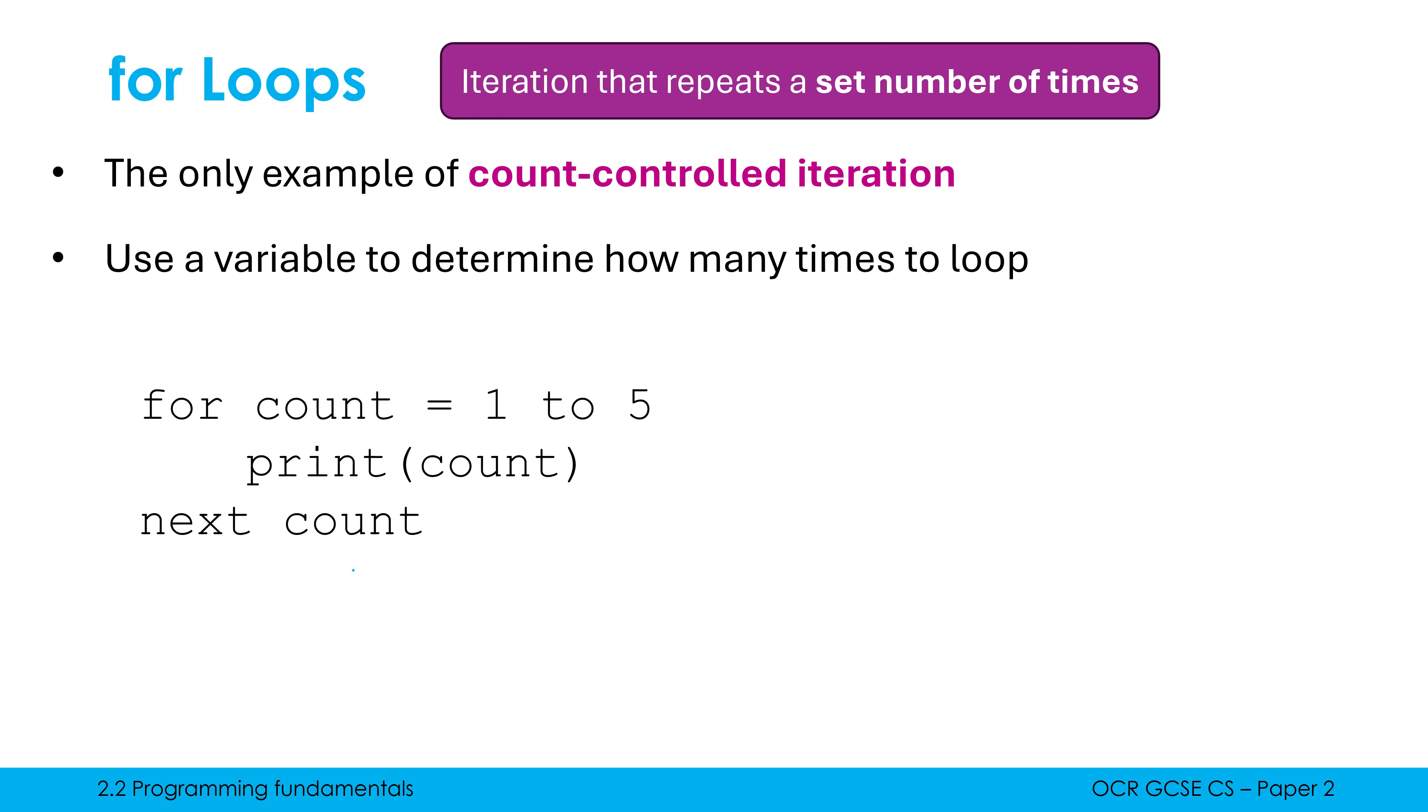So what's happening when this code actually runs? Well, count is initially one, and we print count to the user, so the user sees one on their screen. We then move on to our next count, which by default just adds one to it. So now count is two, and we print two on the screen.